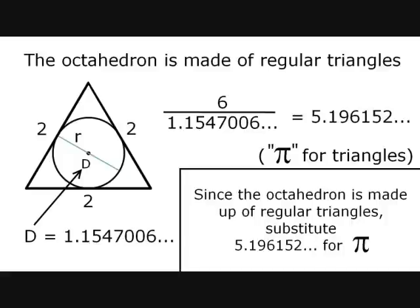So what I have done here is taken the perimeter, 6, and divided it by the inscribed diameter, 1.1547006, and the result was 5.196, and so on. So in the formula 4 thirds pi r cubed, we're going to substitute the triangle constant for pi.